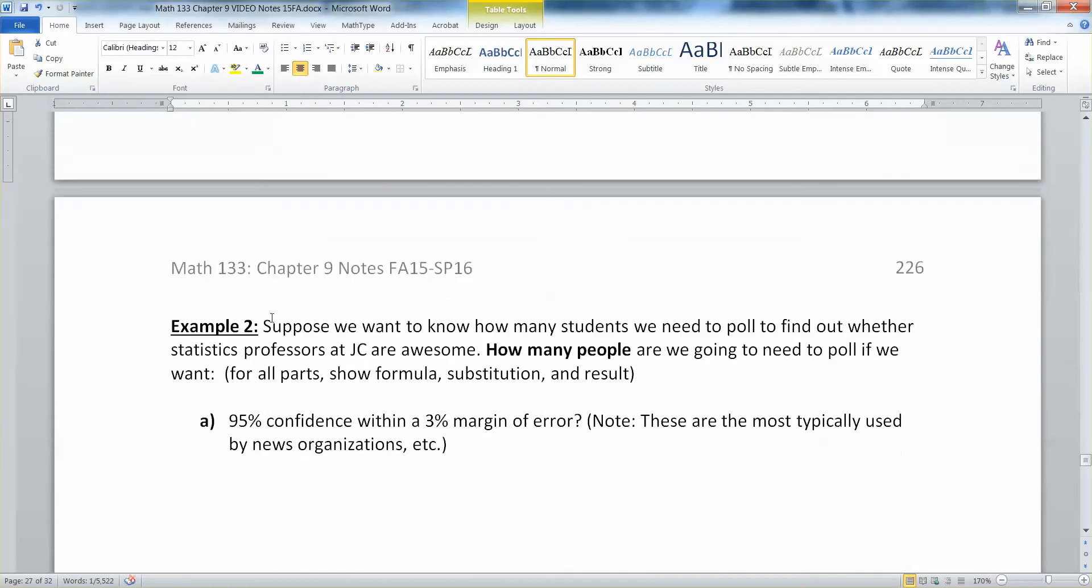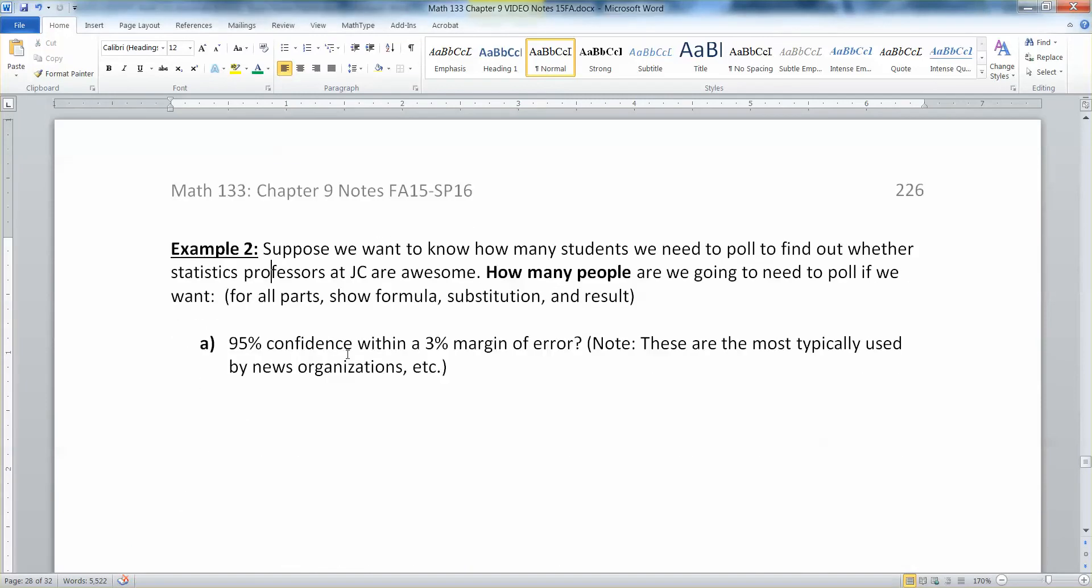Now let's see our example. Suppose we want to know how many students we need to poll to find out whether statistics professors at J.C. Jackson College are awesome. How many people are we going to need to poll if we want 95% confidence within a 3% margin of error? We have a whole bunch of things to figure out.